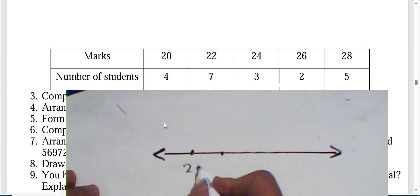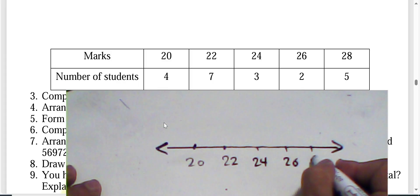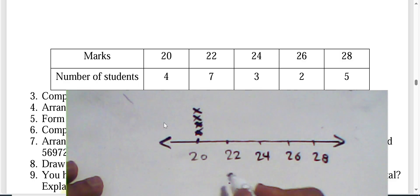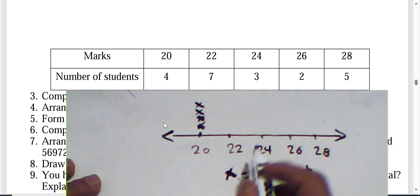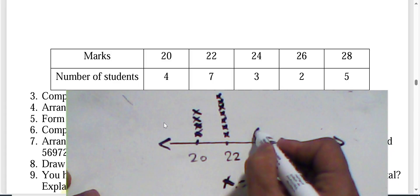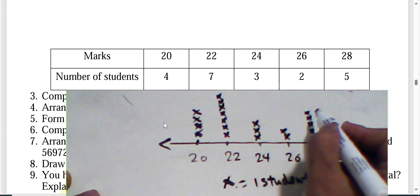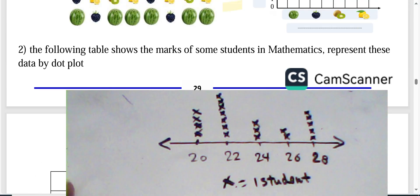On the number line, place values 20, 22, 24, 26, and 28. Mark 20 with four dots, 22 with seven dots, 24 with three dots, 26 with two dots, and 28 with five dots. Add a title: 'Marks of Some Students in Mathematics.'